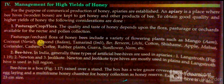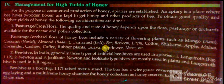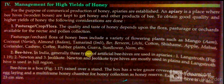Pasturage or flora of honeybees includes a variety of flowering plants such as mango, coconut, almond, tamarind, balsam, cotton, shisham, apple, mahua, coriander, cashew, coffee, rubber plants, guava, sunflower, mint, etc.